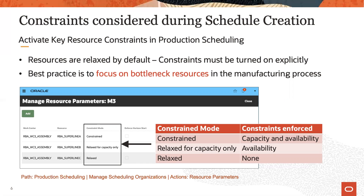Or rather, they are not enforced. Individual resource constraints are explicitly activated in the Manage Resource Parameters page. Here, add the resources of interest and choose the appropriate constraint mode. The three different constraint modes shown in the table at the bottom right are explained next.